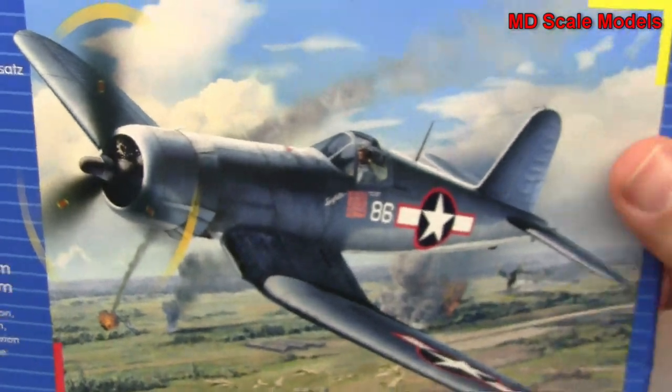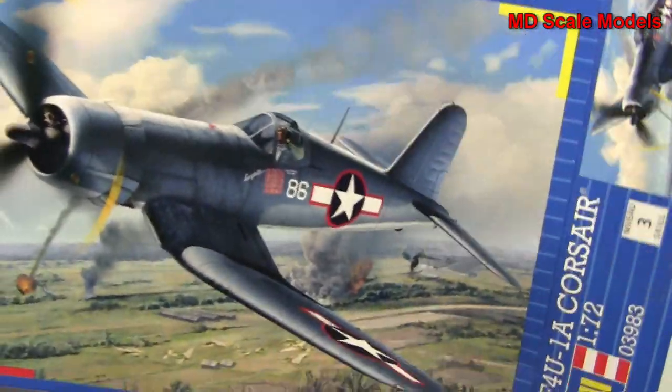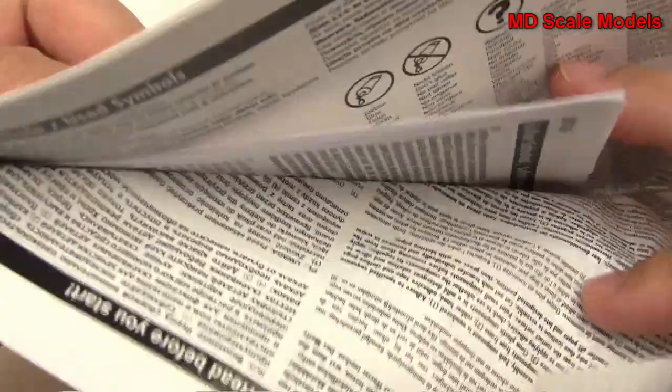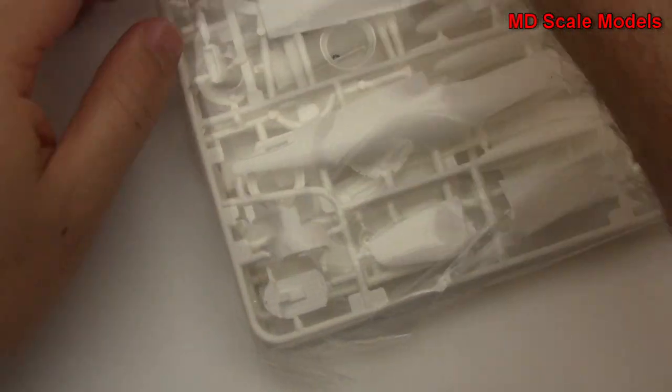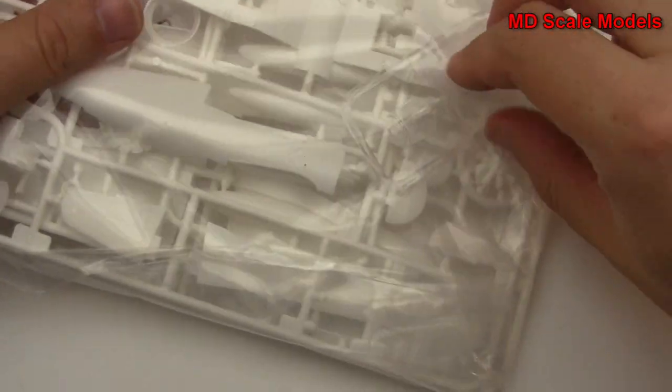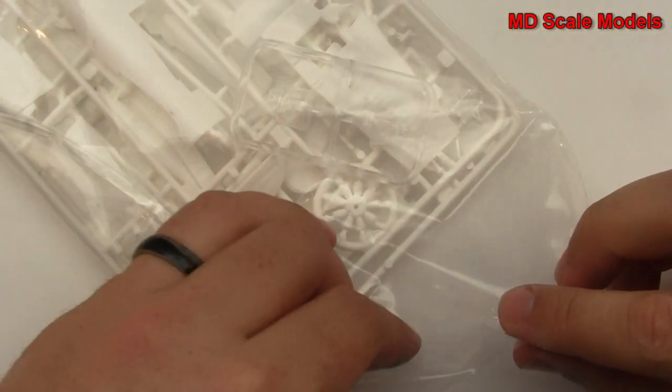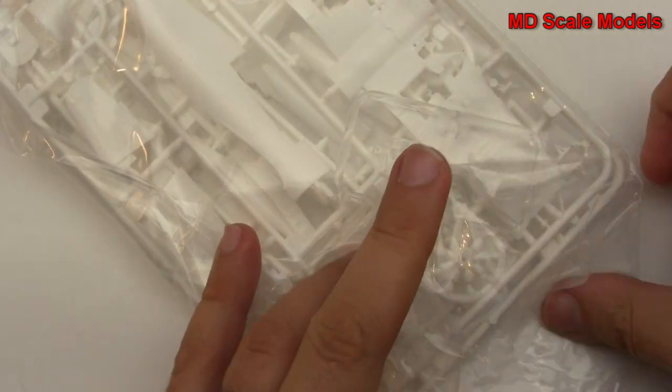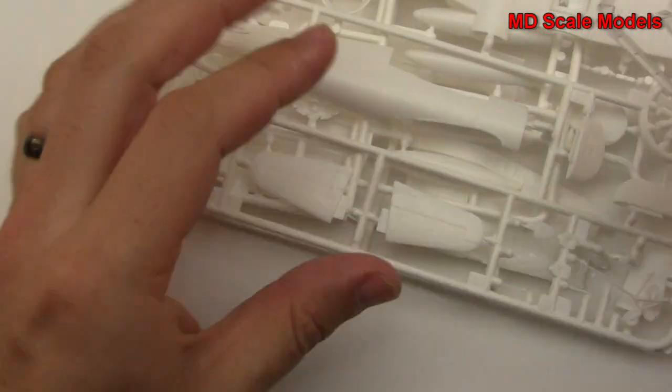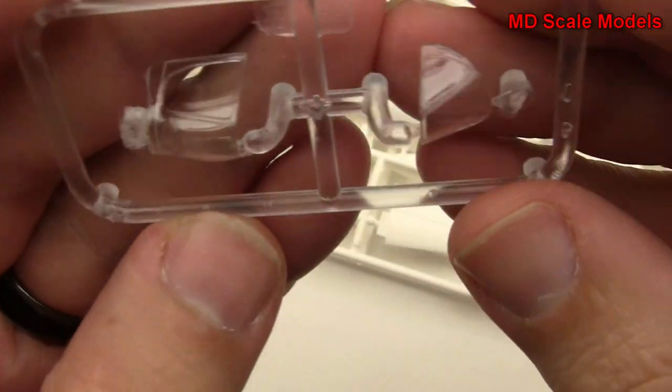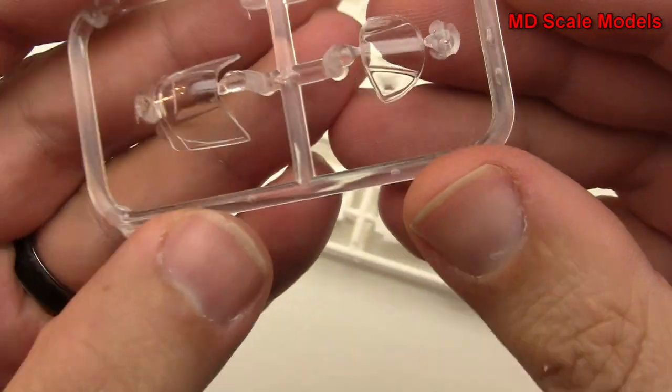Let's have a look inside. We'll take a look at our sprues. So we have our clear plastic sprue here and that's actually quite nicely molded. Quite a good level of detail there.